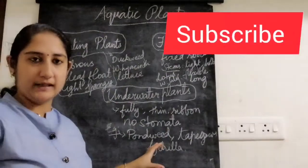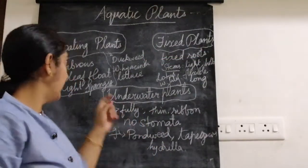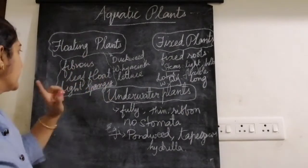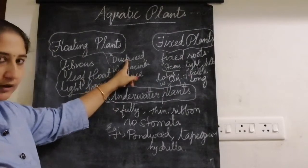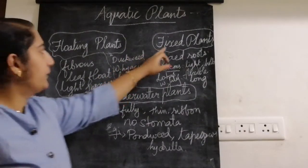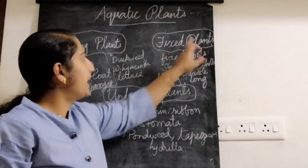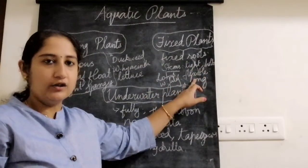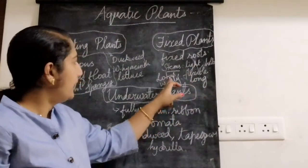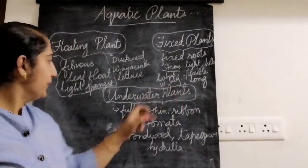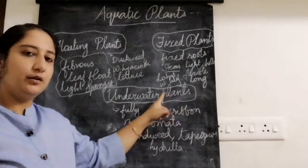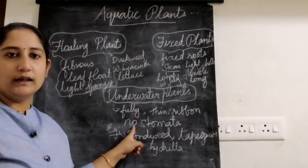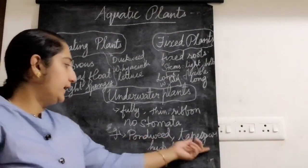Let's have a small recap. Floating plants have fibrous roots, leaves that float on the surface, and they are light and spongy — examples are duck weed, water hyacinth, and water lettuce. Fixed plants have fixed roots and stems that are light, hollow, flexible and long — examples are lotus and water lily. Underwater plants are fully submerged, have thin ribbon-like leaves with no stomata — examples are pond weed, tape grass, and hydrilla.